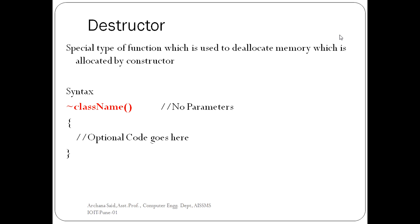The next topic is the destructor. As we have seen, constructors are used to allocate memory for an object. The allocated memory must be destroyed whenever the object is not in use. To handle this, C++ provides a special kind of function called a destructor. The destructor's prototype also carries the same name as the class, without any parameters.